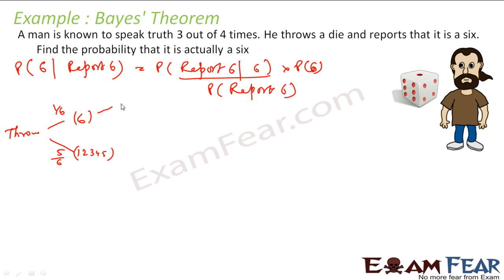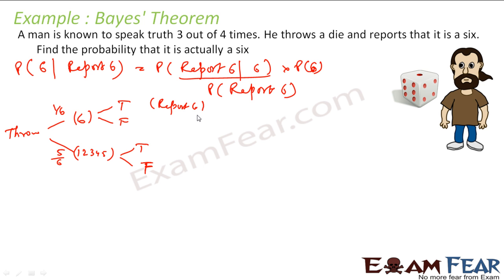Now, in both cases he may speak true or false. If this guy is speaking true, he is reporting 6 here — because 6 actually came and he reported truthfully. In the other case, if it is not 6 and he is telling false, that means he is reporting 6. True probability is 3/4 and false is 1/4.